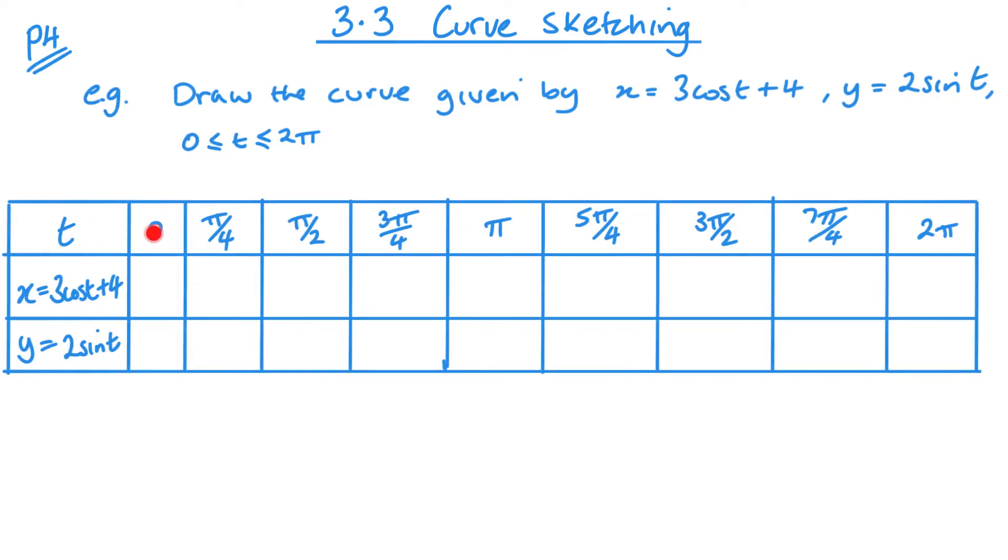All I need to do now is substitute my values of t into my x and then into my y. Substituting zero in, we get 3 cos(0), which is 3, plus 4, which is 7. Substituting it into y, we get 2 sin(0), which is 0. Then if I want to substitute in π/4...